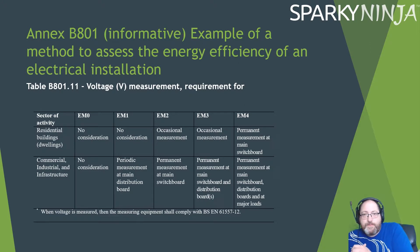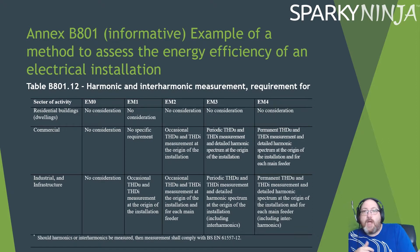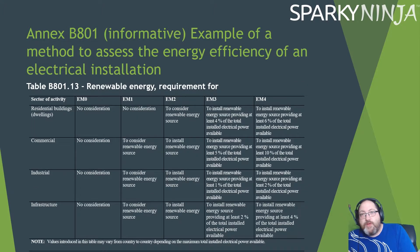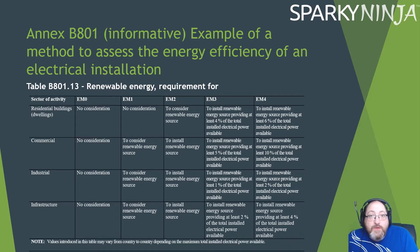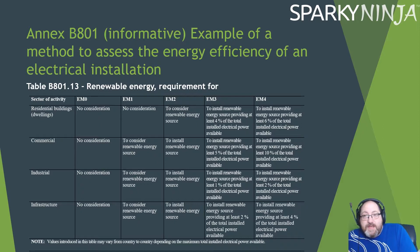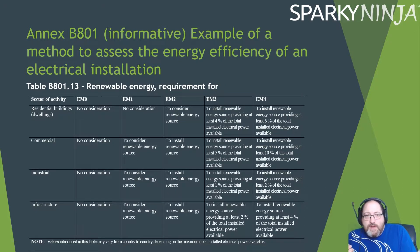Voltage measurement: permanent measurement at the main switchboard scores lower; permanent measurement at the main switchboard, distribution boards, and major loads scores higher. Harmonic and interharmonic measurement is also included as a category. For renewable energy sources: installing a renewable energy source providing at least 60% of total installed electrical power scores well — the thresholds are 10% for commercial and 2% for industrial, which makes sense as industrial is far more demanding.